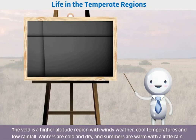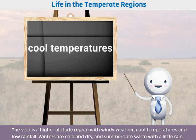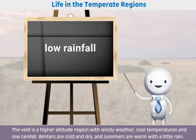The veld is a higher altitude region with windy weather, cool temperatures, and low rainfall. Winters are cold and dry, and summers are warm with a little rain.